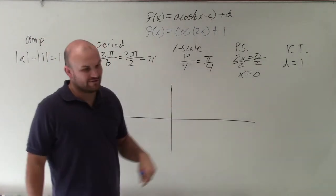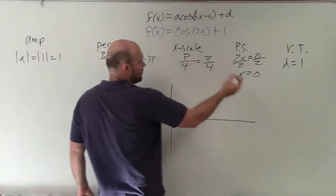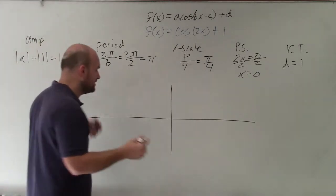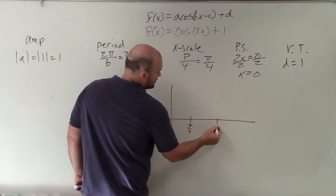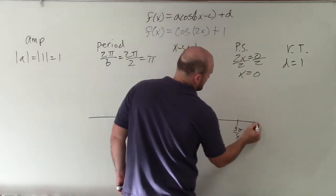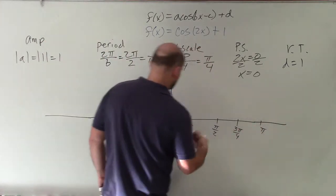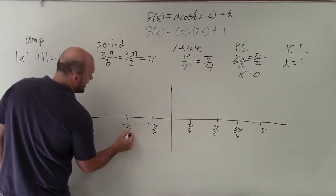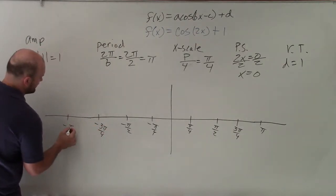We're going to start at 0, and then I have an x-scale of pi fourths. That means every single important part is going to be pi over 4 away from each other. So I'll do two periods to the right and two periods to the left - a positive period and a negative period. That's pi fourths, 2 pi fourths is pi halves, 3 pi fourths, and this one would be pi. Go to the left, negative pi over 4, negative pi halves, negative 3 pi over 4, and negative pi.